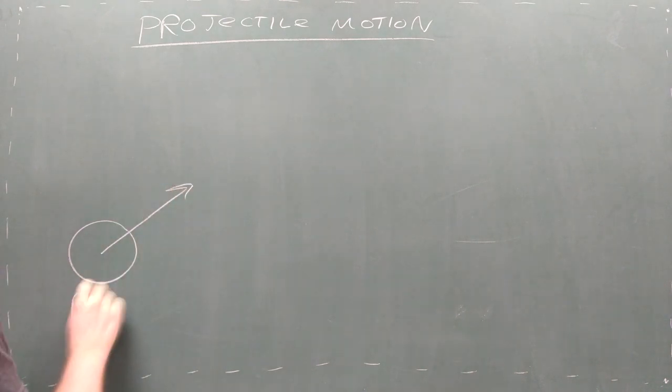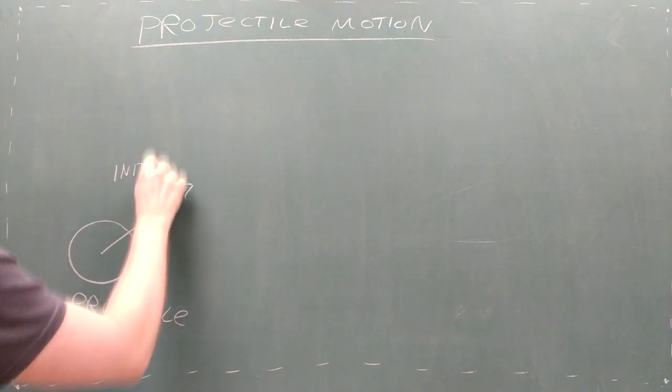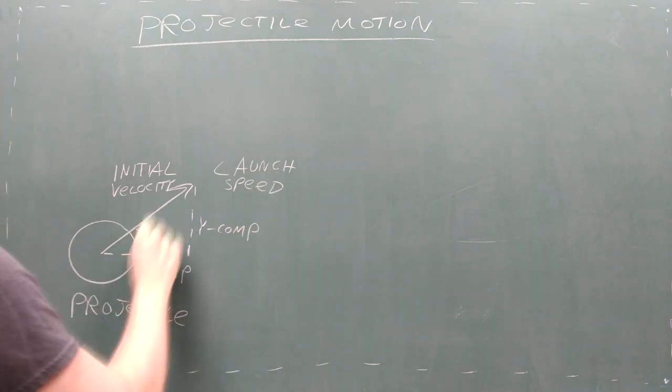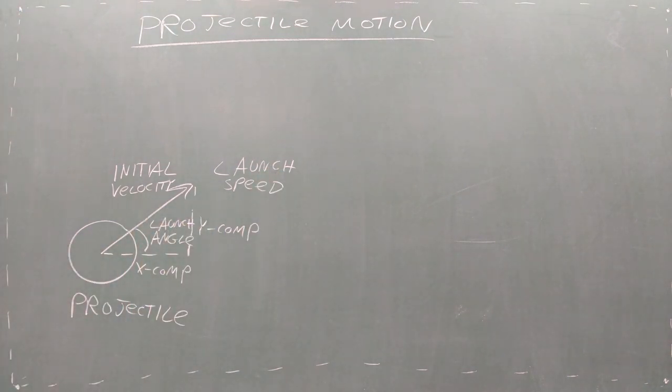Projectile motion problems usually involve launching an object called a projectile with an initial velocity. We could give this velocity in terms of x and y components, but it's usually more convenient to specify the launch speed and the launch angle.